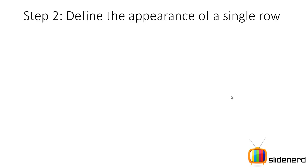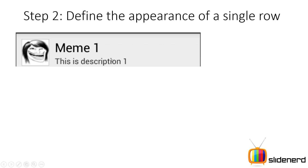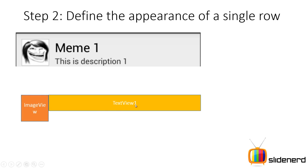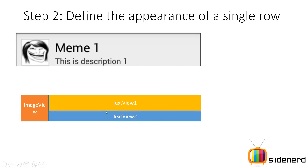Step two: define the appearance of a single row. If you look at this single row carefully, you have an ImageView representing the image, a TextView for the title like 'Mimi1' with a large font size, and another TextView for the description. You need to create this structure inside an XML file. For the ImageView I'll use a size of 48 by 48, and all images will be 48 by 48 in size.